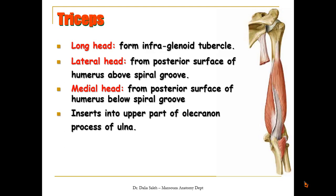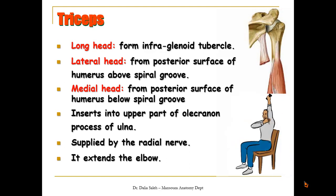The three heads unite into a single insertion at the upper part of the olecranon process of the ulna. This muscle is supplied by the radial nerve by separate branches and it extends the elbow.